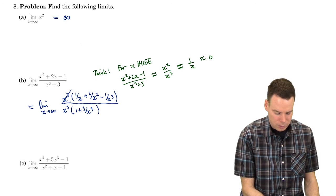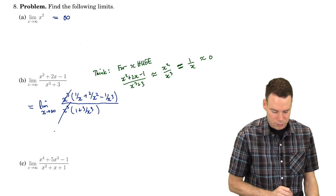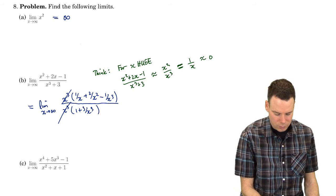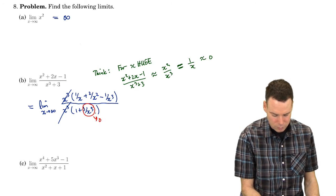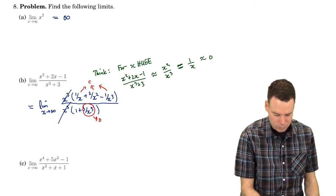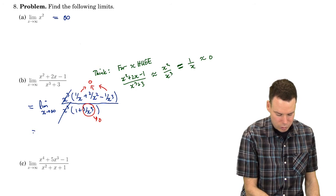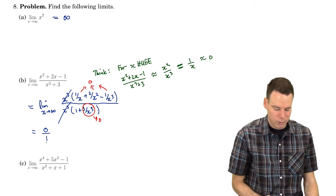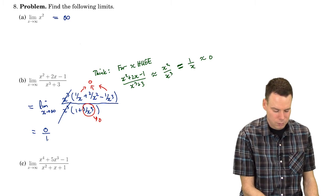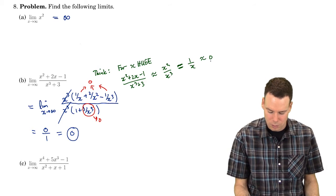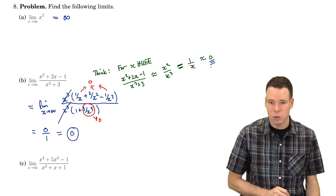Now the x cubeds cancel with each other. As x goes to infinity, each of those terms goes to 0, so the entire expression boils down to 0 over 1 plus 0, or 0 over 1. Zero divided by 1 is 0, and so our limiting value is 0 — exactly what we expected.